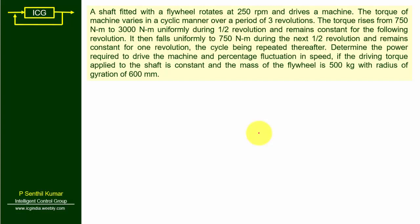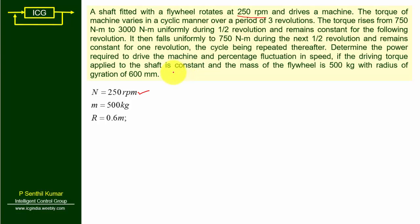Next, let us solve a problem related to an IC engine. A shaft fitted with a flywheel rotates at 250 rpm and drives a machine. The torque of the machine varies in a cyclic manner over 3 revolutions, i.e., 6π. The torque rises from 750 Newton meters to 3000 Newton meters.